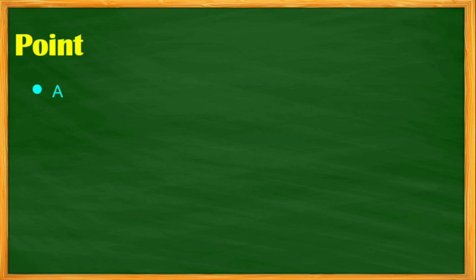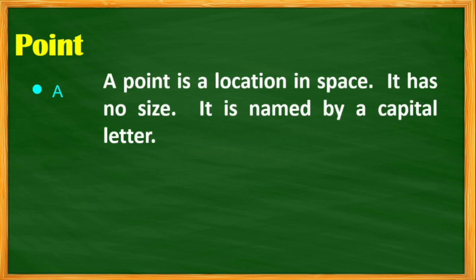Next, point. A point is a location in space. It has no size. It is named by a capital letter. So it's read as point A or write a capital letter A.